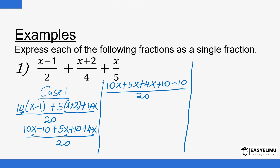So 10 − 10 is zero. We have 10 + 5 + 4 = 19, giving us 19x divided by 20. That is the simplest form of that algebraic fraction — you cannot simplify it further than that.